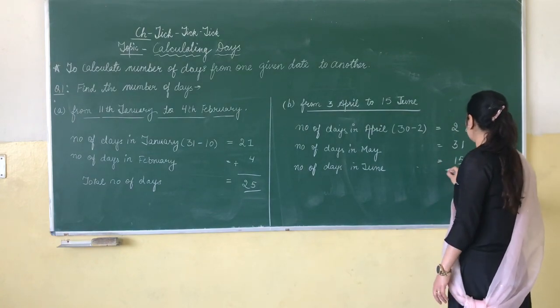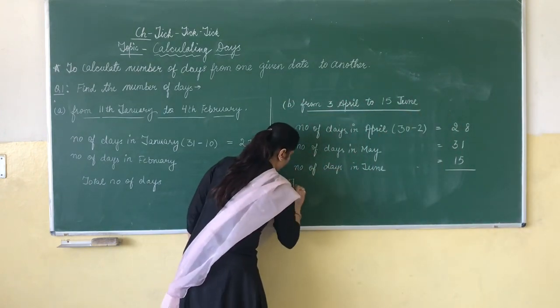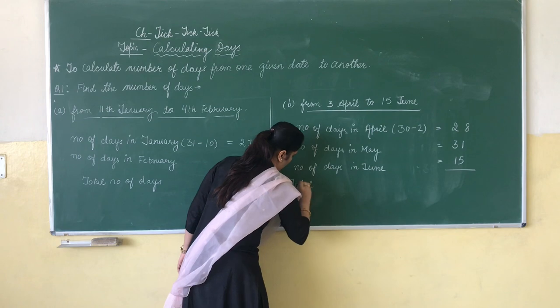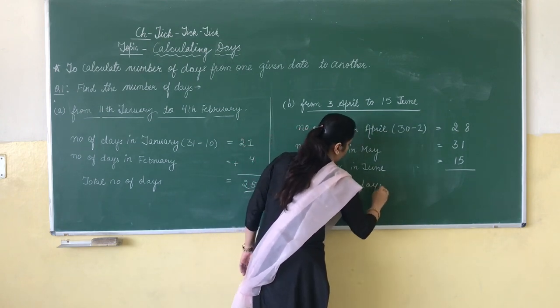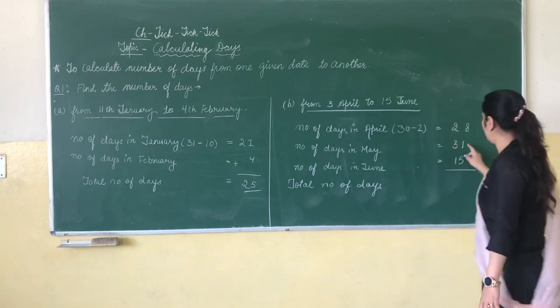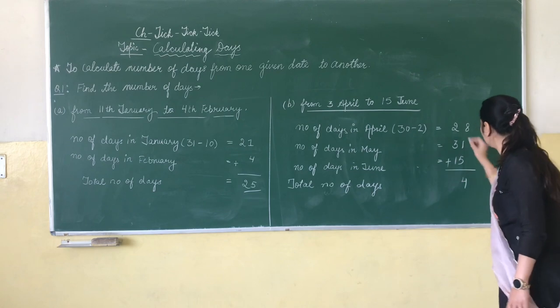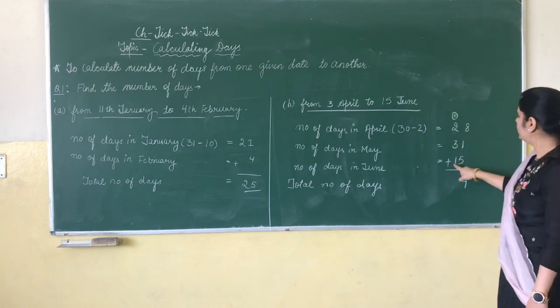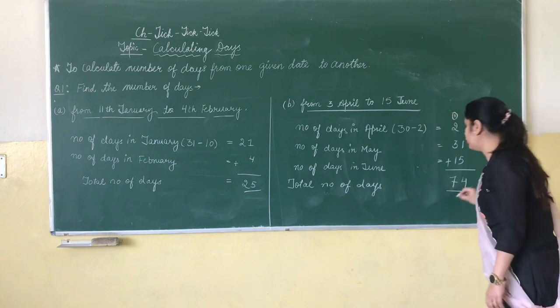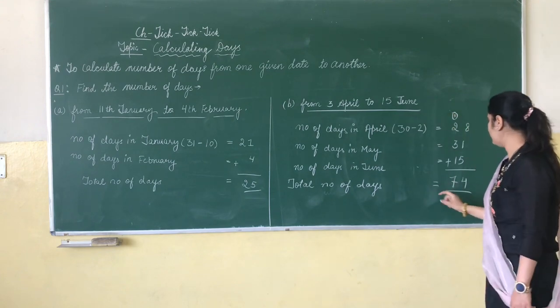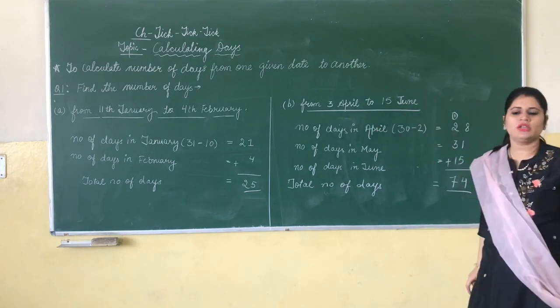Number of days of June are 15. Total number of days, 5 plus 1 is 6, 6 plus 8 is 14, 1 carry forward, 1 plus 3 is 4, 4 plus 2 is 6, 6 plus 1 is 7. So total number of days are 74 from 3rd April to 15th June.